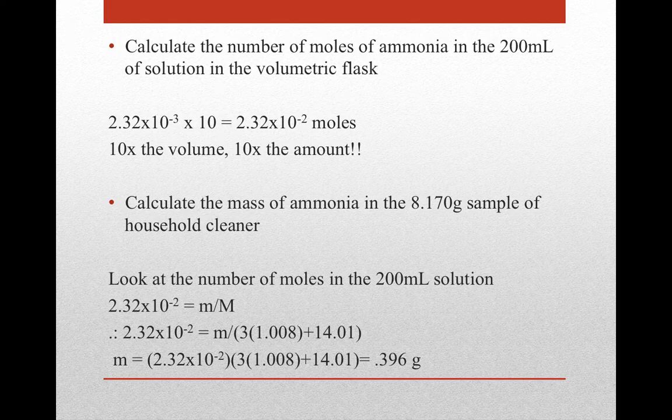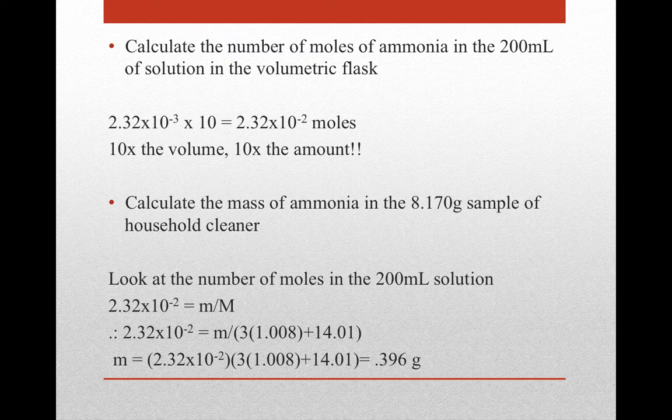If we're asked for the moles of ammonia in the full 200 millilitre solution in the volumetric flask, we need to multiply by 10, since 200 mL is 10 times the 20 mL aliquot. So 2.32 × 10⁻³ becomes 2.32 × 10⁻² moles — just a change in order of magnitude.